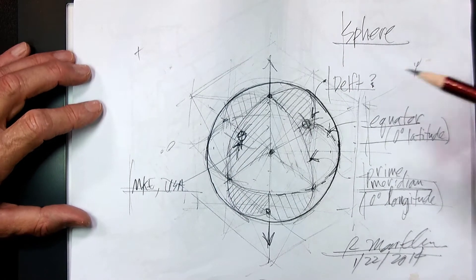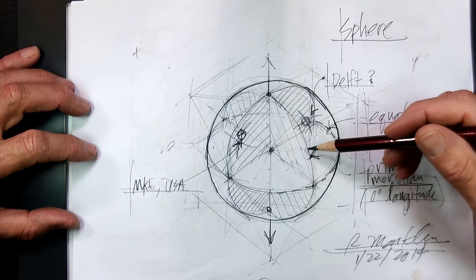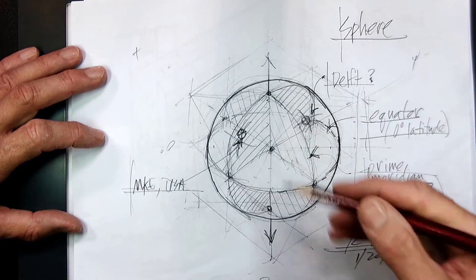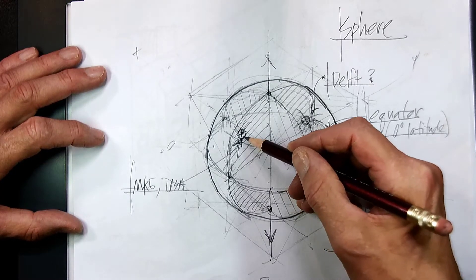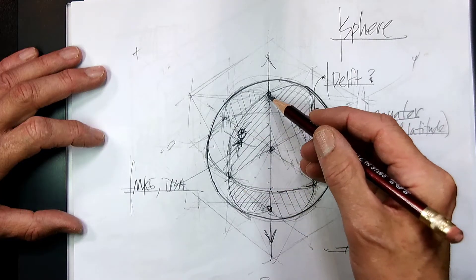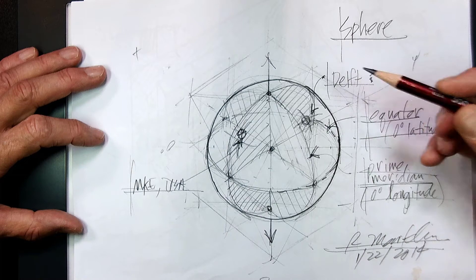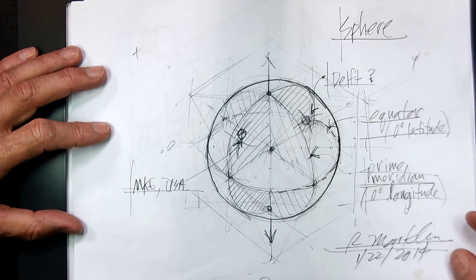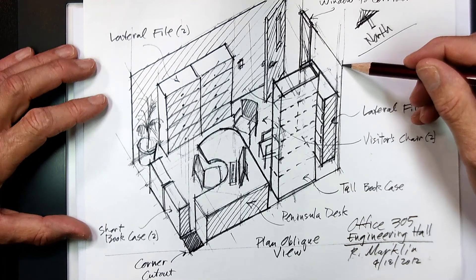Here's another drawing that I did. This is a sphere. I made it into the Earth. Here's the equator, the prime meridian. This is where I live, Milwaukee, Wisconsin, 43 degrees latitude, and approximately 90 degrees longitude west of where I am right now, which is Delft, Netherlands.